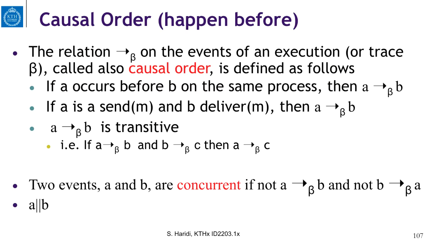Let us remember again the happens-before relation. It is a relation on executions and traces, and it is sometimes called causal order. If two events A and B occur on the same process and A occurs before B on that process, then we say A is before B. And if A is an event of sending a message and B is an event of the delivery of that message, then A happens before B. The relation is also transitive.